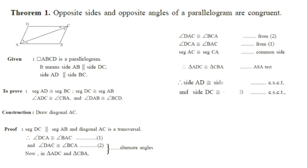Since these two triangles are congruent, their corresponding components must be congruent. Side AD corresponds to side CB, so AD is congruent to CB. Side DC corresponds to side AB, so DC is congruent to AB. The reason is CSCT — corresponding sides of congruent triangles. This proves that segment AD is congruent to segment BC and segment DC is congruent to segment AB.